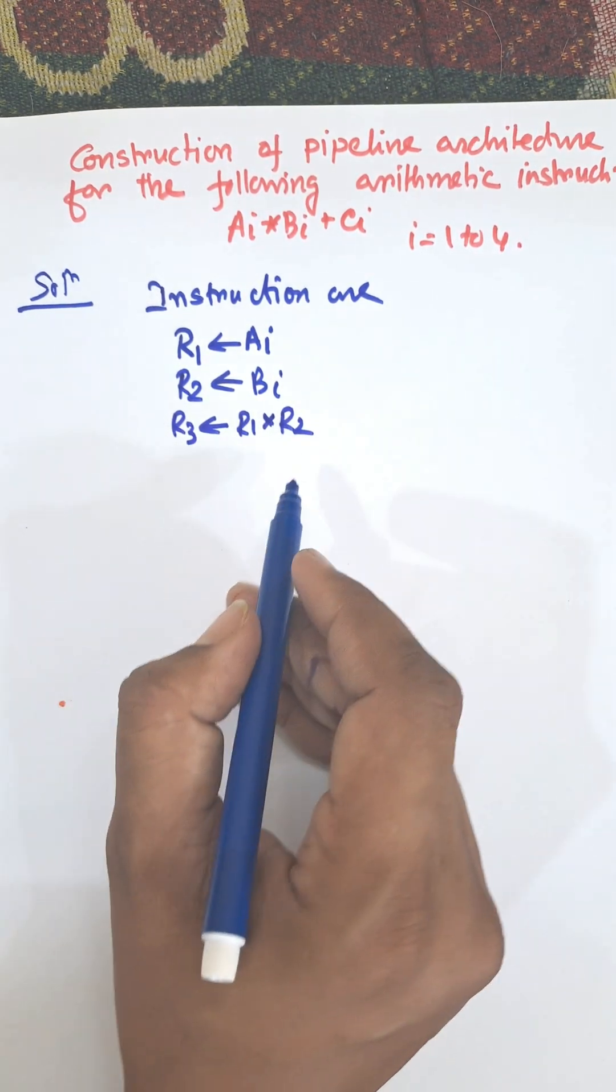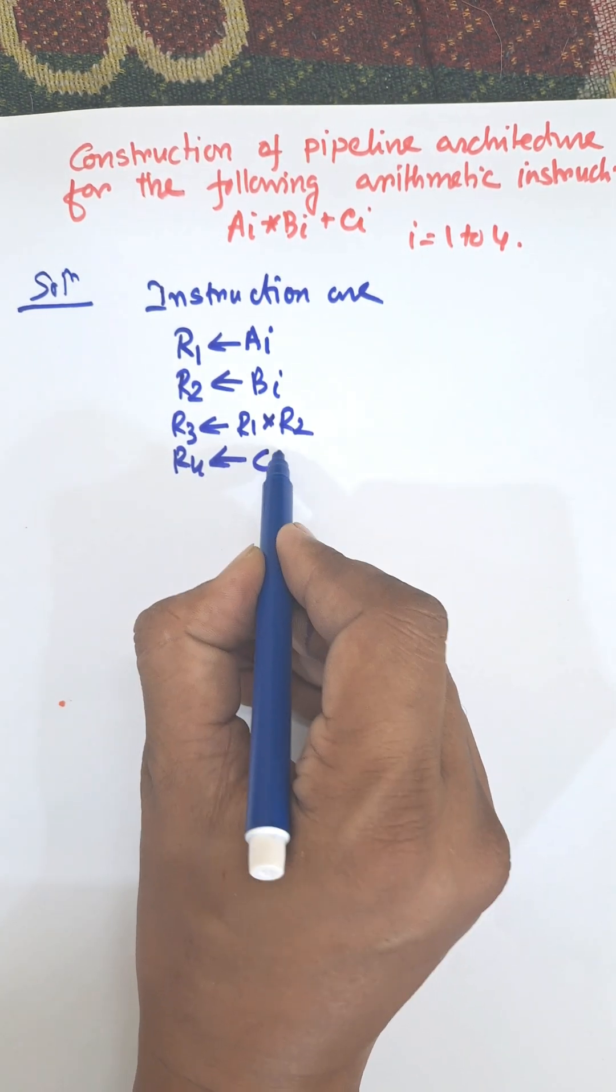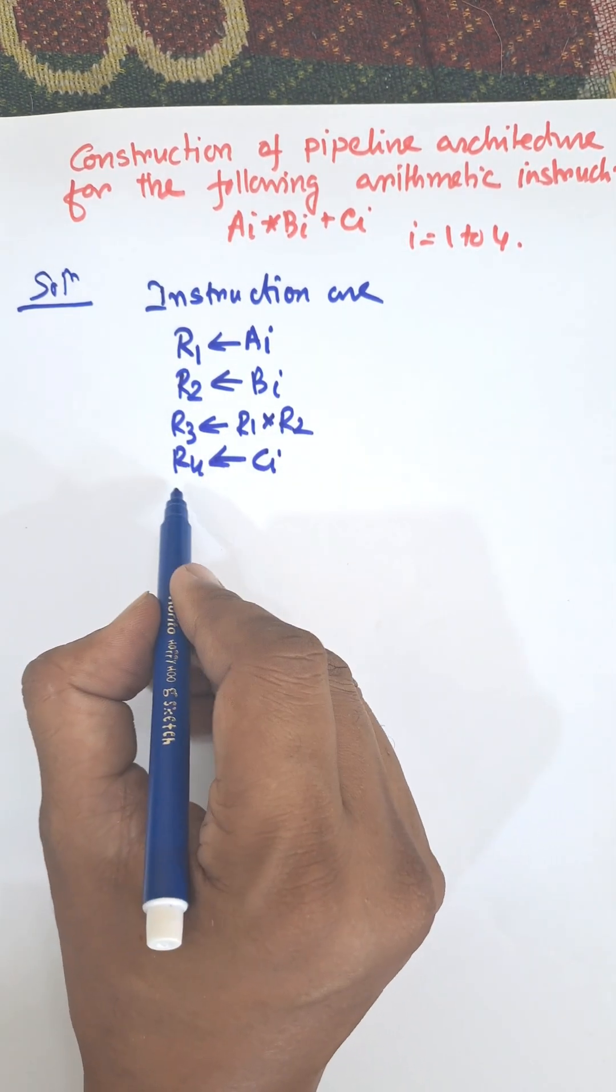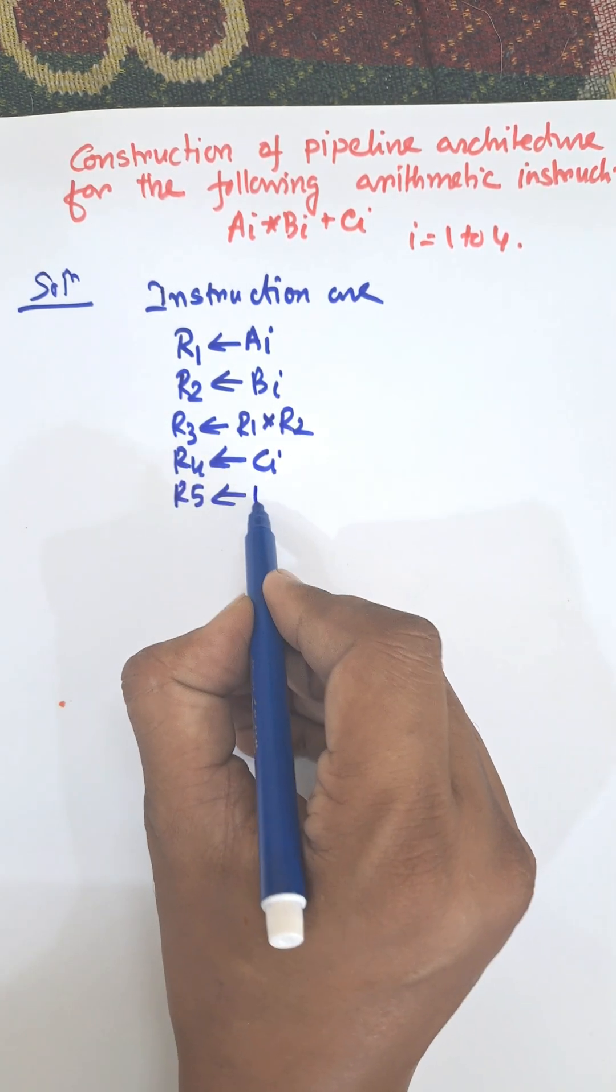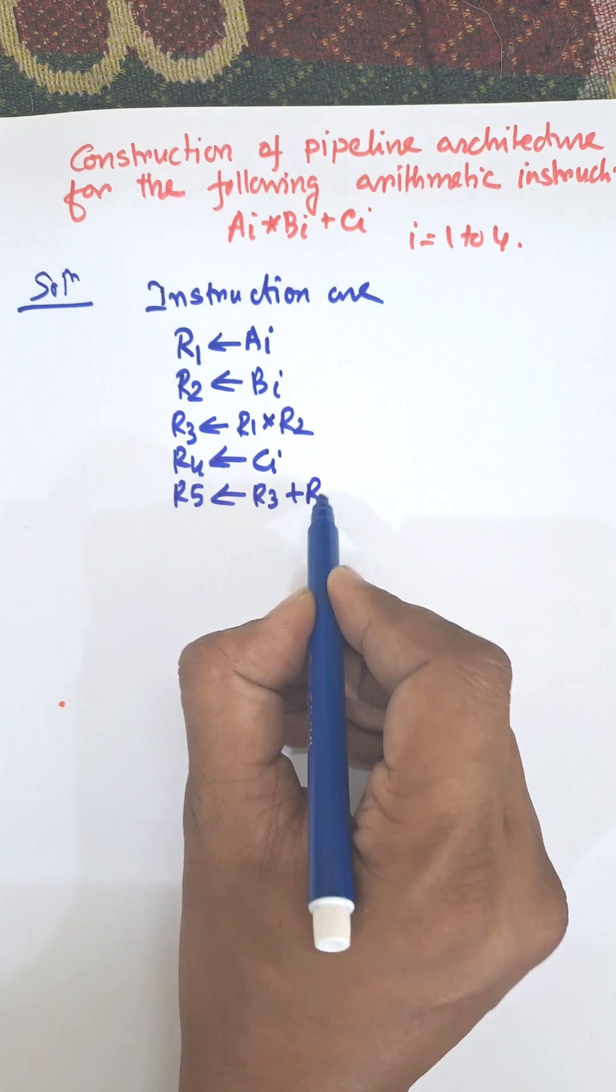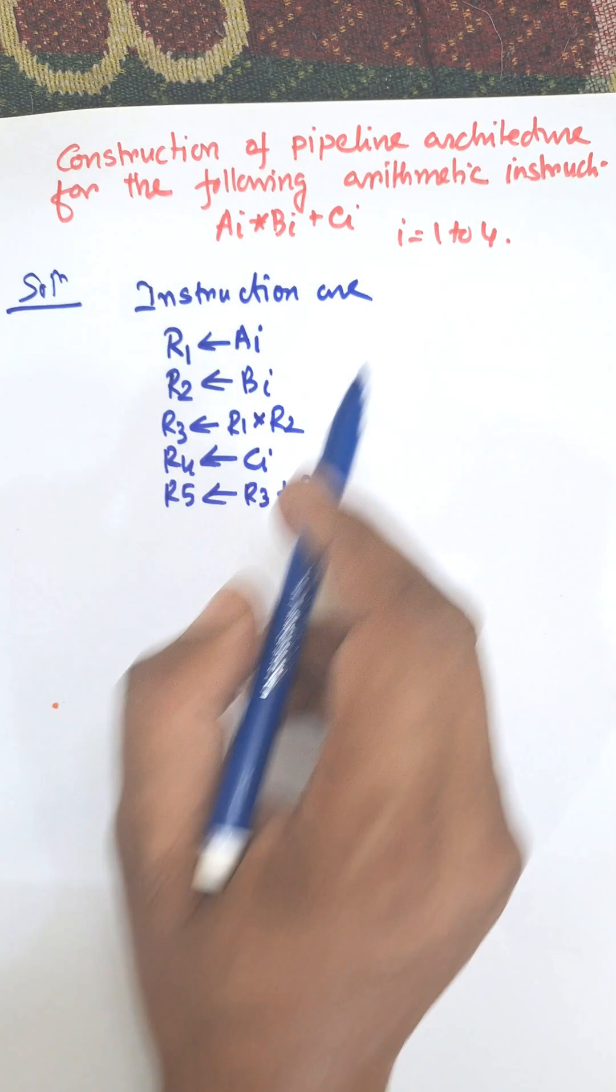And then next, ci is loaded into r4. Then the result of r3 and r4 will get the final result: r5 will be r3 plus r4. So these are the instructions that decompose the large instruction.